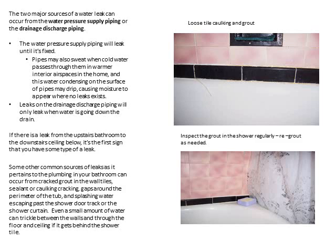The water pressure supply piping will leak until it's fixed. The pipes may also sweat when cold water passes through them in the warmer interior air spaces in the home. This water condensing on the surface of pipes may drip, causing moisture to appear where no leaks exist. Leaks on the drainage discharge piping will only leak when water is going down the drain. If there is a leak from the upstairs bathroom to the downstairs ceiling below, it's the first sign that you have some type of a leak.